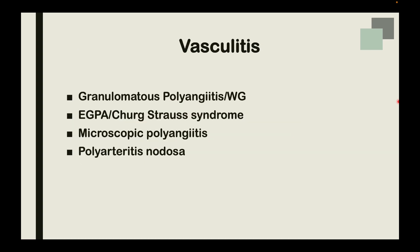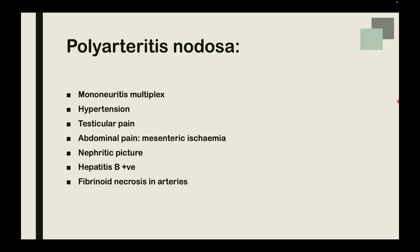Next up is polyarteritis nodosa — every point is important: Hepatitis B association, mesenteric ischaemia, fibrinoid necrosis. Rheumatology is easy if you know the right technique to study. If you can quickly identify these key points in the clinical question stem, you will save a lot of time and ensure you answer correctly.